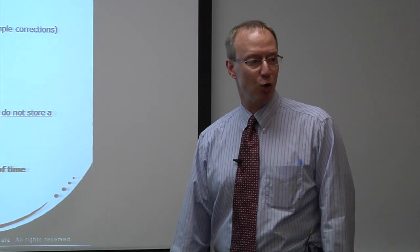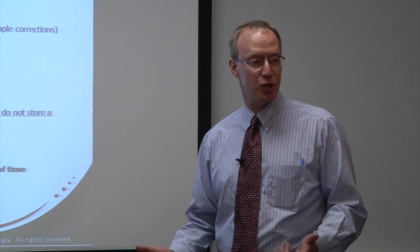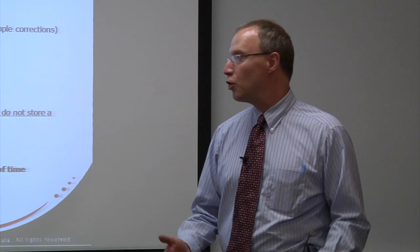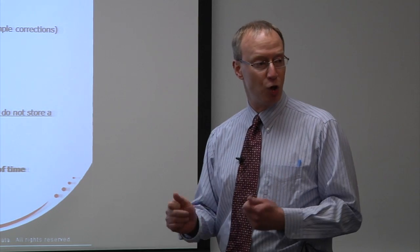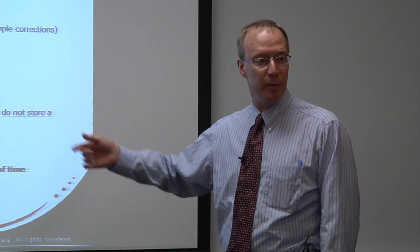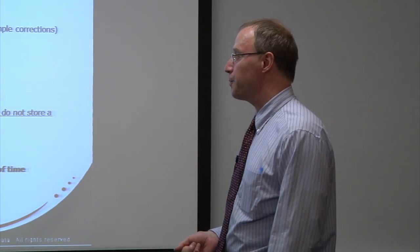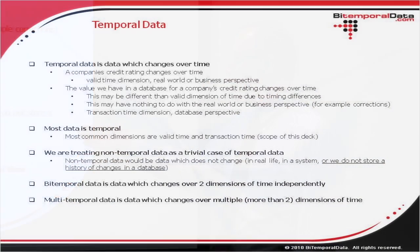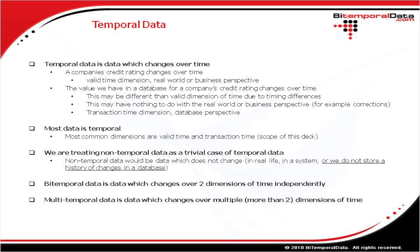From this definition, you may have already guessed that most data really is temporal in nature — it's not permanent, it changes over time. The most common dimensions of time we talk about in computer science and IT are the valid and transaction dimensions of time, and that's the scope of what I'm going to be talking about tonight. Non-temporal data would be data which does not change in real life, in a system, or where we do not track the changes in a database. When we talk about these different types of temporality, generally we're talking about whether you can see the history of data changing over these dimensions of time.